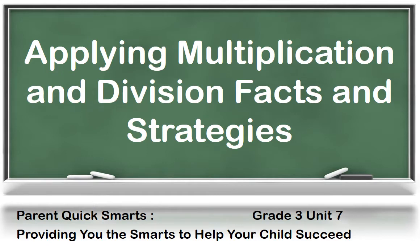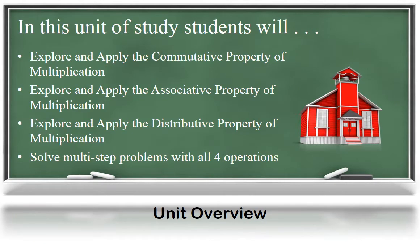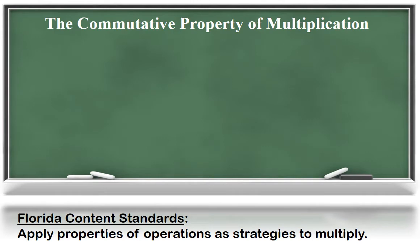Welcome to this edition of Parent Quick Smarts, third grade Unit 7: Applying Multiplication and Division Facts and Strategies. In this unit of study, students will explore and apply the commutative property of multiplication, explore and apply the associative property of multiplication, explore and apply the distributive property of multiplication, and solve multi-step word problems with all four operations.